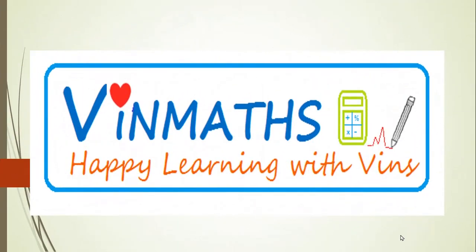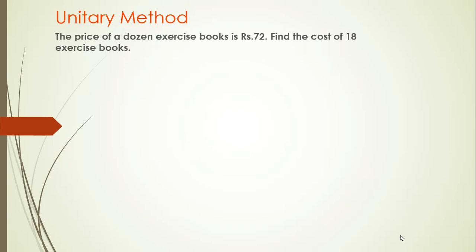Namaste students, this is Vinayak Tony, your mathematics teacher. In this video we are going to learn about some problems on unitary method. Here is the problem: the price of a dozen exercise books is rupees 72. Find the cost of 18 exercise books. A dozen means 12 books, priced at 72 rupees. They are asking us to find the cost of 18 such books.